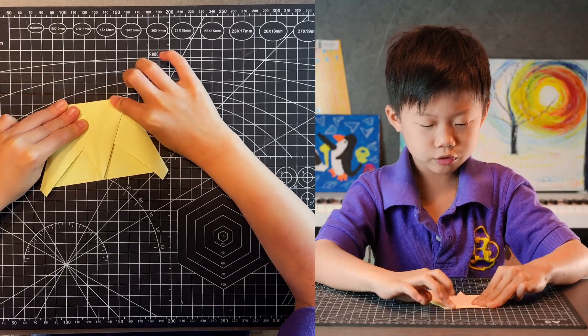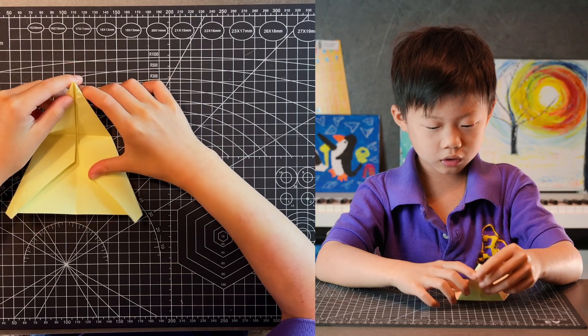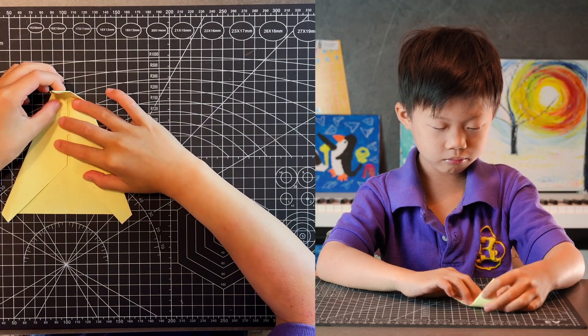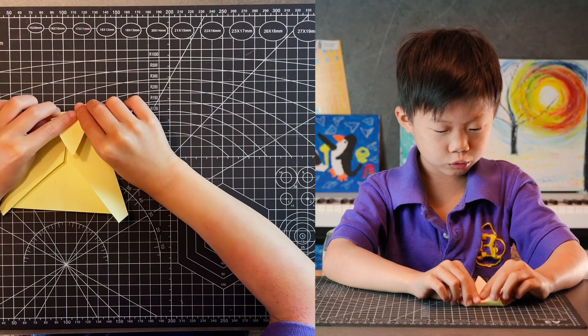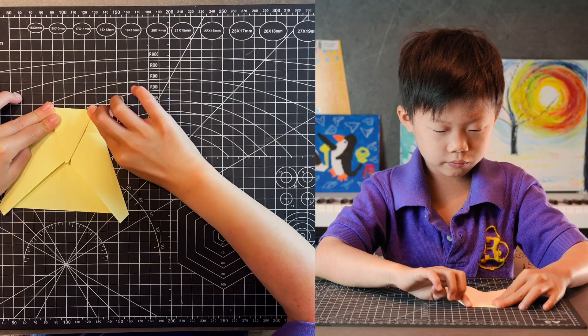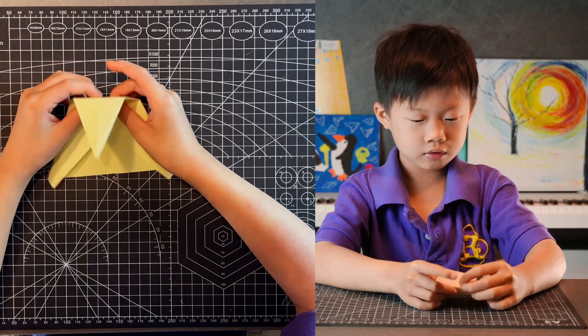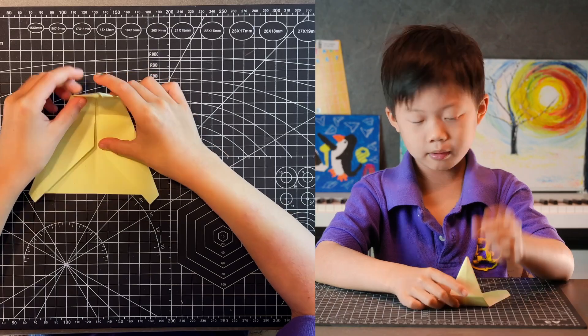Fold your top point to your bottom point. And then fold your top point to the point where the crease and edges intersect. And then open it up again.